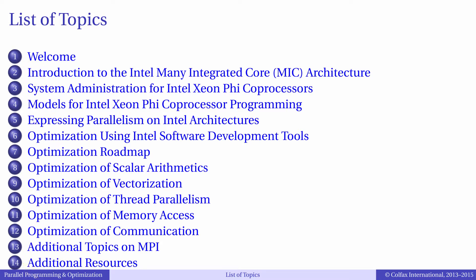The structure of the course consists of five parts: introduction, architecture overview, programming models, parallel frameworks, and optimization.